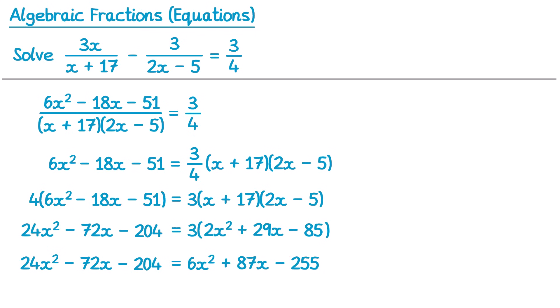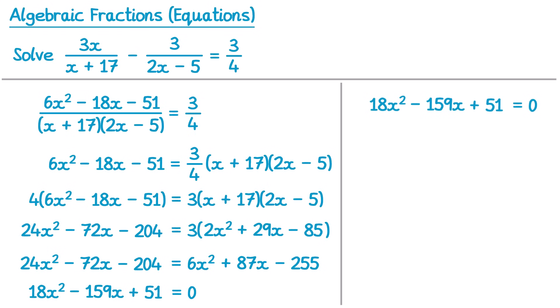So we do end up with a quadratic equation to solve. Since we have more x squareds on the left hand side, I'm going to make the right hand side equal to zero on this one. So I'd need to subtract 6x squared, subtract 87x, and add 255 to both sides. On the left hand side: 24x squared minus 6x squared is 18x squared, negative 72x minus 87x is negative 159x, and negative 204 plus 255 gives a positive 51. And the right hand side equals zero. Now let's take that quadratic equation and solve it. It looks really nasty because of the size of the numbers, but there is actually a common factor of 3. Dividing 18x squared by 3 gives 6x squared, negative 159x divided by 3 is negative 53x, and 51 divided by 3 is 17. And of course 0 divided by 3 is still 0.